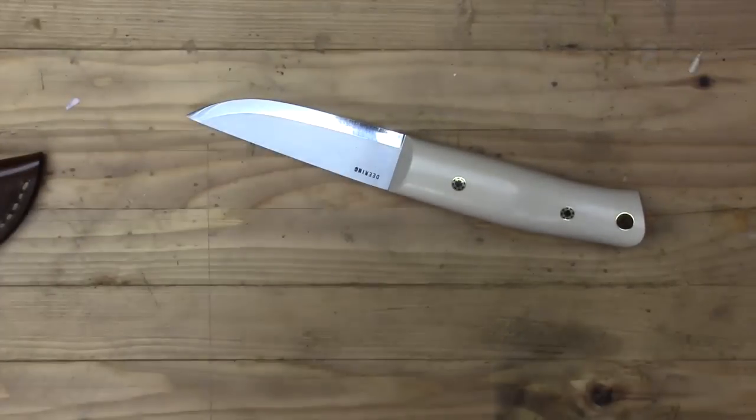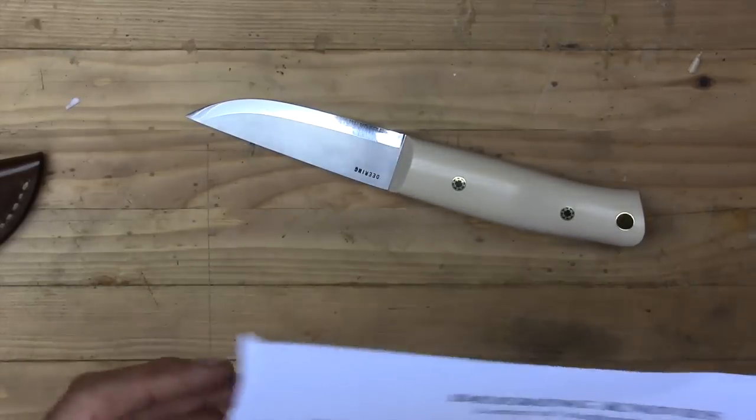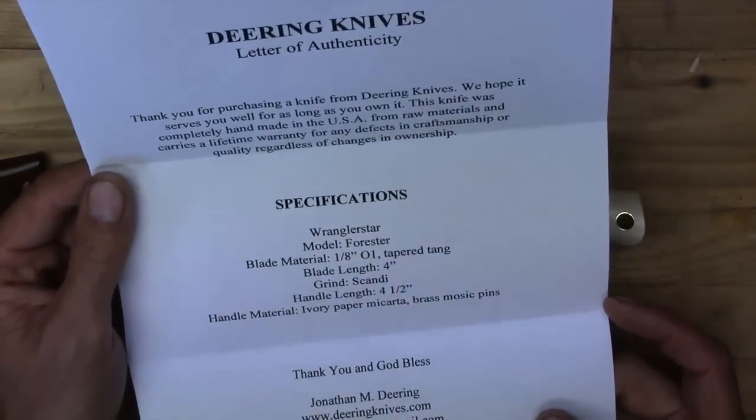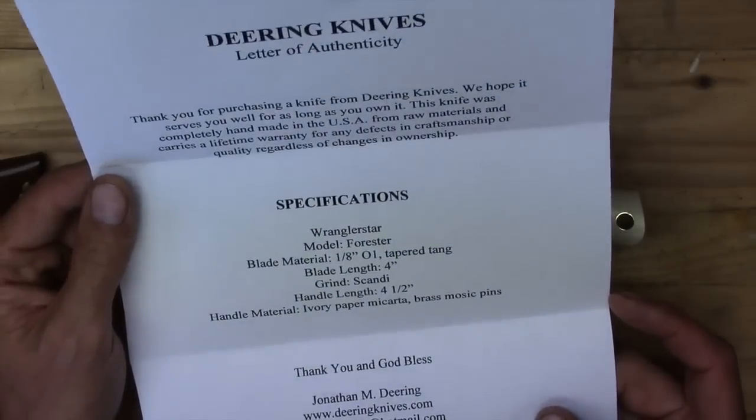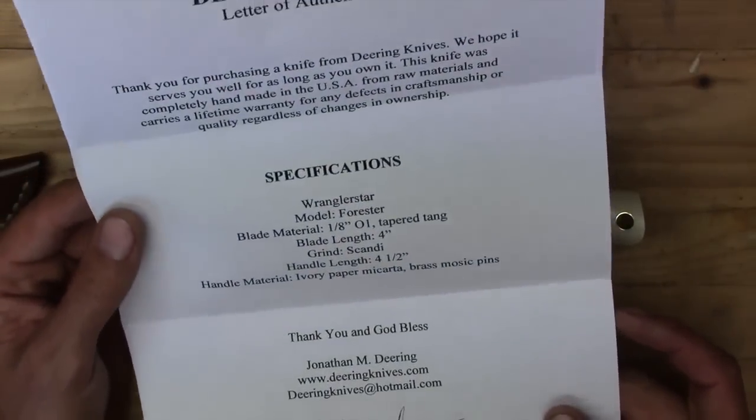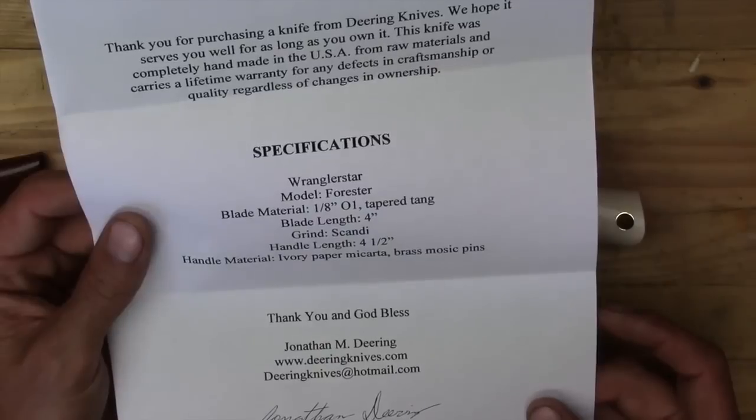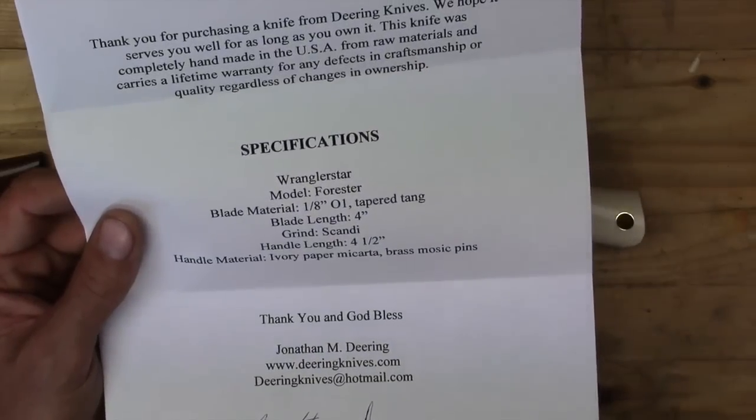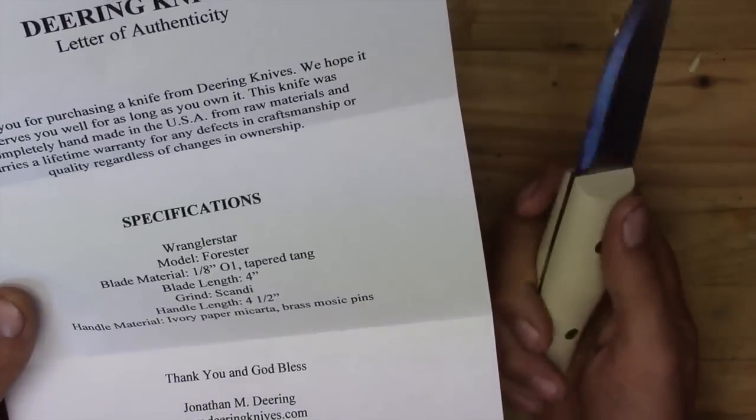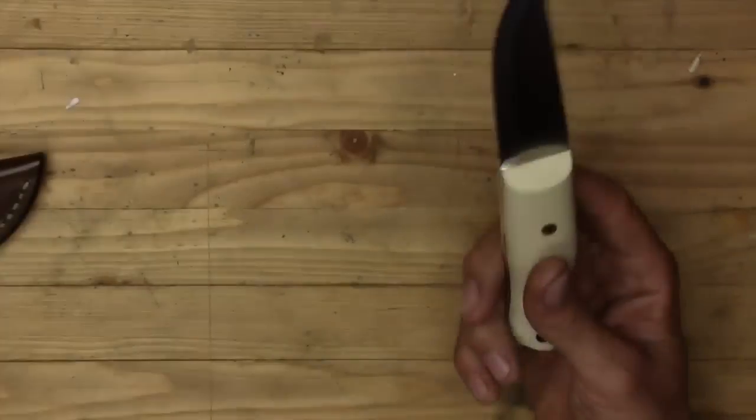There's a letter here. Oh, it's from Dearing Knives. Letter of authenticity. Thank you for purchasing a knife from Dearing Knives. We hope it serves you well for as long as you want it. This knife was completely handmade in the USA with raw materials and carries a lifetime warranty for any defects in craftsmanship or quality, regardless of changes of ownership. Specifications: Wrangler Star, model Forester, blade model eighth inch thickness, Aus-1, tapered tang, four inch blade, Scandi grind, four and a half inch handle, ivory paper micarta with brass mosaic pins. Thank you and God bless. Hand signed by Jonathan Dearing. Wow.